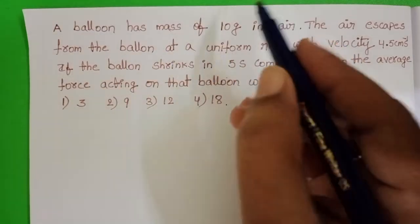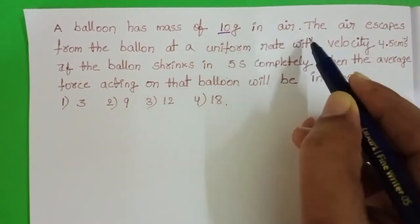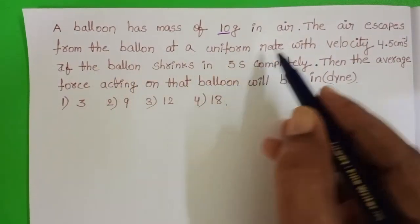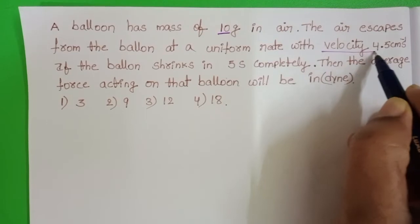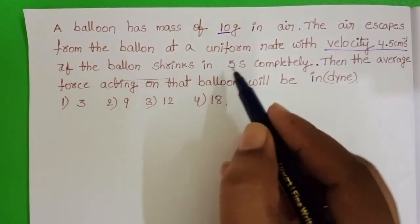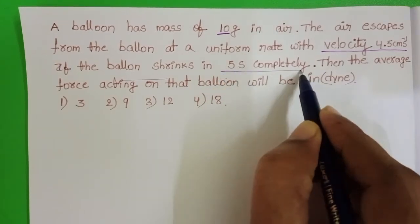A balloon has mass of 10 grams in air. The air escapes from the balloon at a uniform rate with velocity 4.5 cm per second. If the balloon shrinks in 5 seconds completely, then the average force acting on that balloon will be: